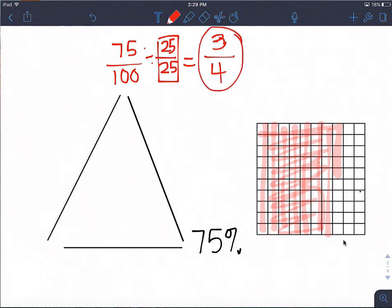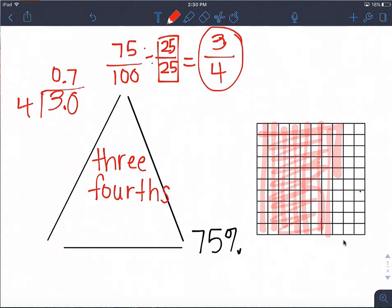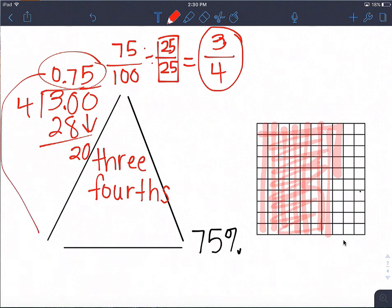Now, I could write for my words either seventy-five hundredths or three fourths. And, that's a lot less. So, I'm going to write three fourths. And, again, I can take my fraction. And, I can divide three by four. Four doesn't go into three. But, it goes into thirty seven times. And, that's twenty-eight. Left with two. Doesn't go into two. But, it goes into twenty five times. So, there we go.